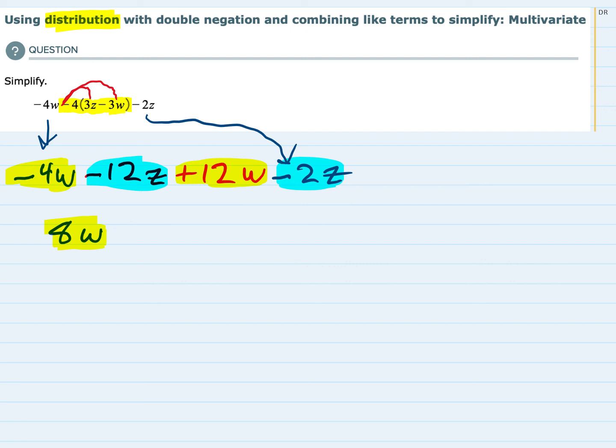In this case, the signs are the same. So our rules for addition are, when the signs are the same, we add and keep the sign. So adding 12 and 2 is 14, and keeping the sign means this is going to be minus as well. And it's still a Z term.